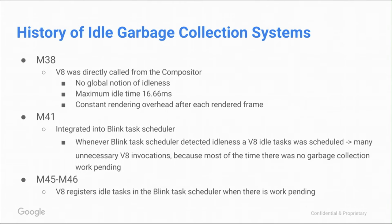The first version in M41 took the same model of continuously calling V8 whenever there was an idle task — the Blink scheduler respawned new idle tasks all the time. In that sense it was still wasteful, as V8 got called many, many times when there was not much work to do. But we were then able to get a better picture of what's going on in the system and got up to 50 milliseconds of idle time. Recently in M45 and M46, we switched the model completely — instead of getting called all the time, we call the Blink scheduler and ask it to call us back when it has time, reducing overhead significantly.